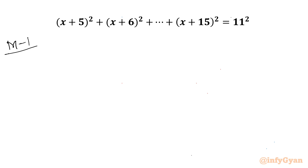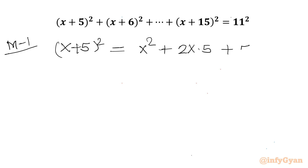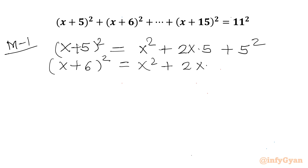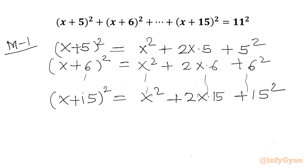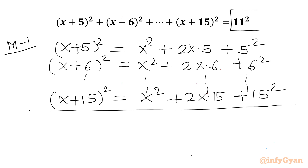Let me write Method 1, where I will use expansion. (x+5)² can be written as x² + 2·x·5 + 5². Similarly, (x+6)² = x² + 2·x·6 + 6², and so on up to (x+15)² = x² + 2·x·15 + 15². The LHS equals 11².